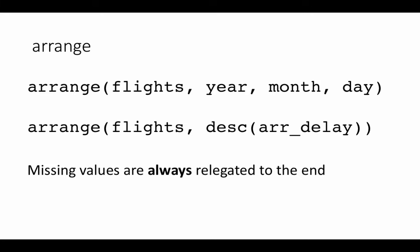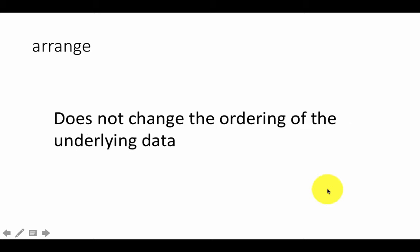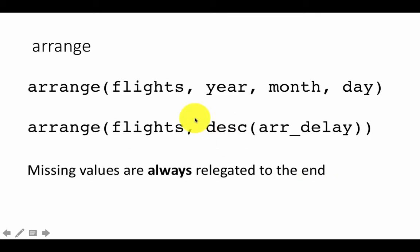Missing values are always relegated to the end of the output. When you execute a function like arrange, what you get back is a new table — it's not that the original table has been changed in any way. The original table flights remains exactly as it is, with absolutely no change, but what you're getting back is a copy of that table arranged in the way you asked for.